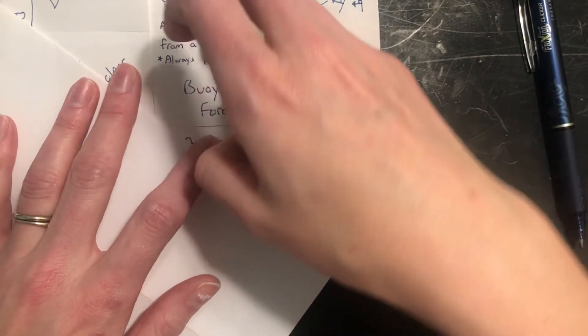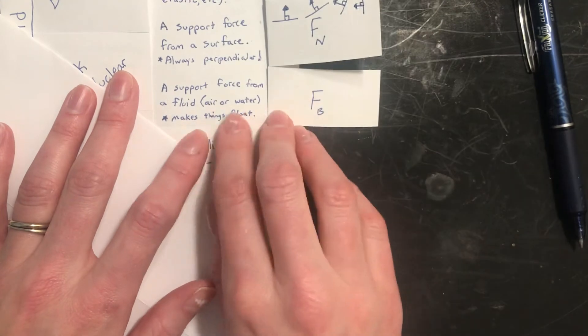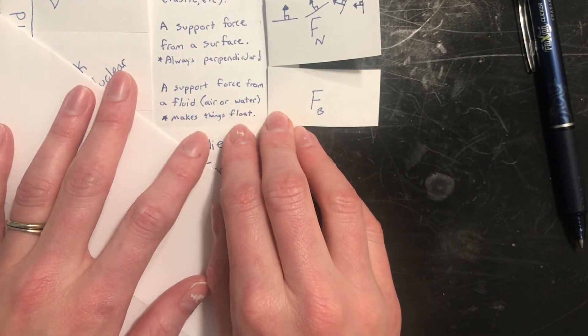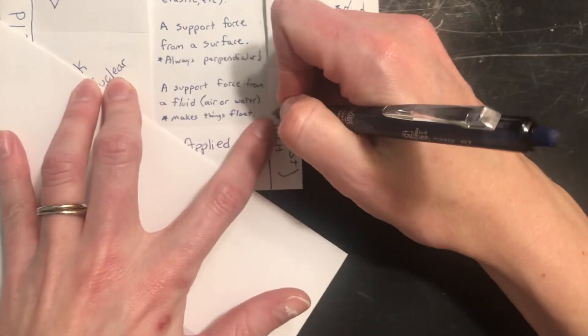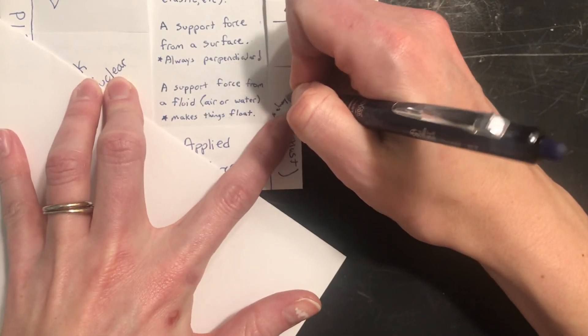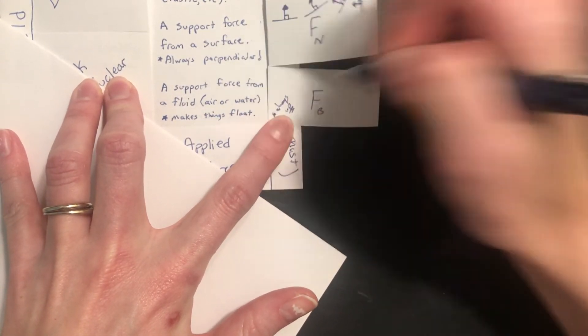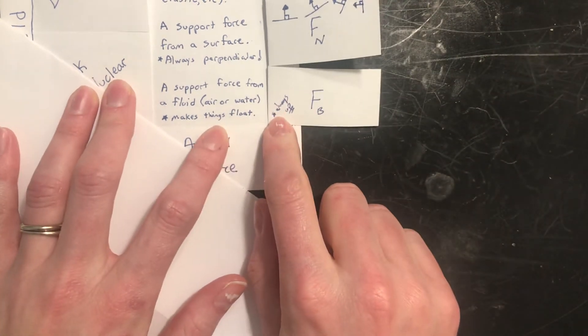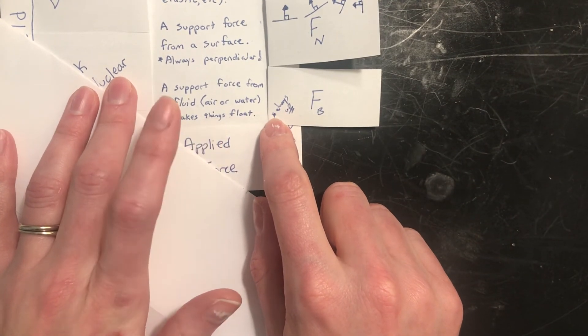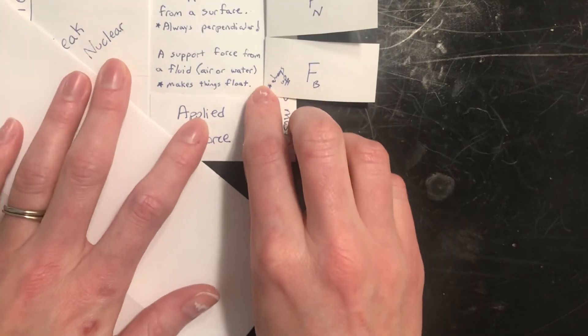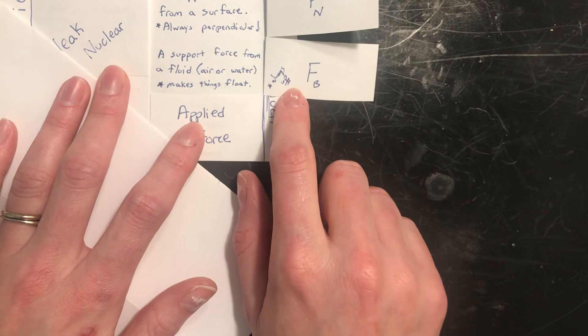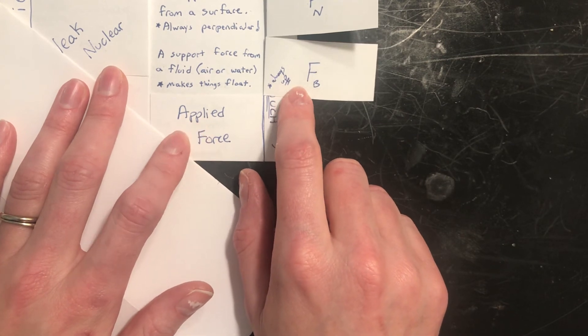A buoyant force is also a support force, that's why it's right here, but it's a support force from a fluid. It always pushes up. I should make a note of that there. Always up. Buoyant forces always push up. Buoyant forces make things float. Air and water can do this, so balloons float in air, they also float in water, people float in water too. So if it's a buoyant force, if it's floating, it's a buoyant force.